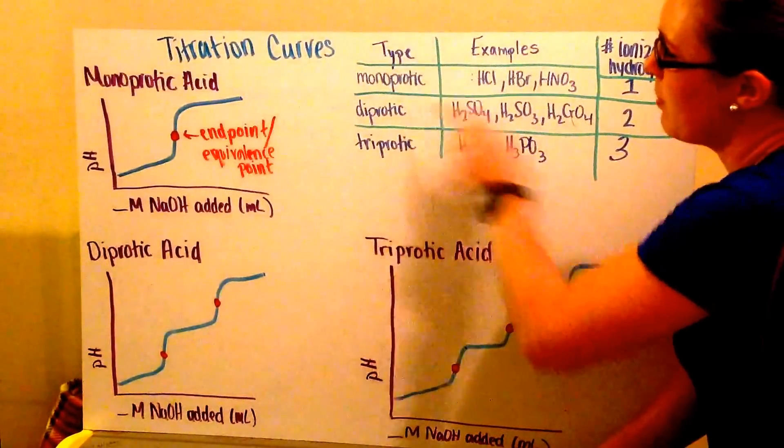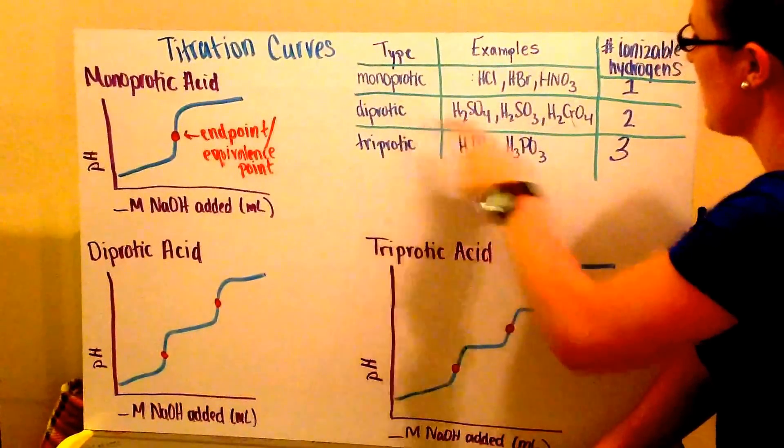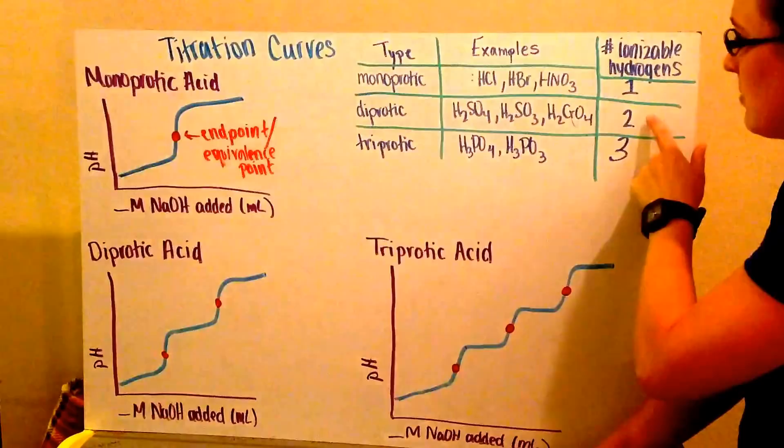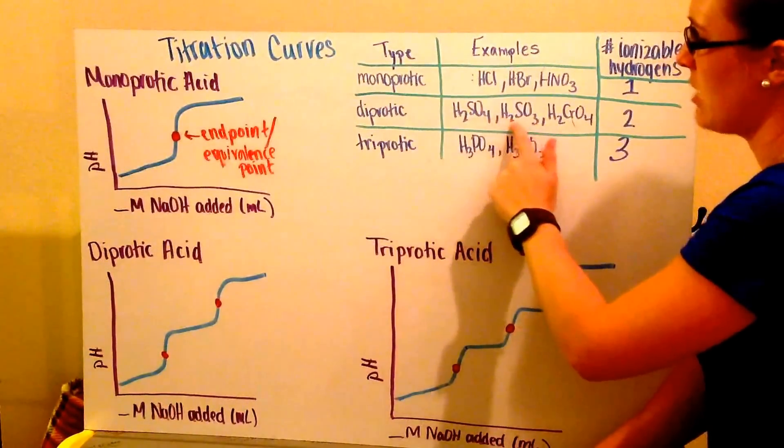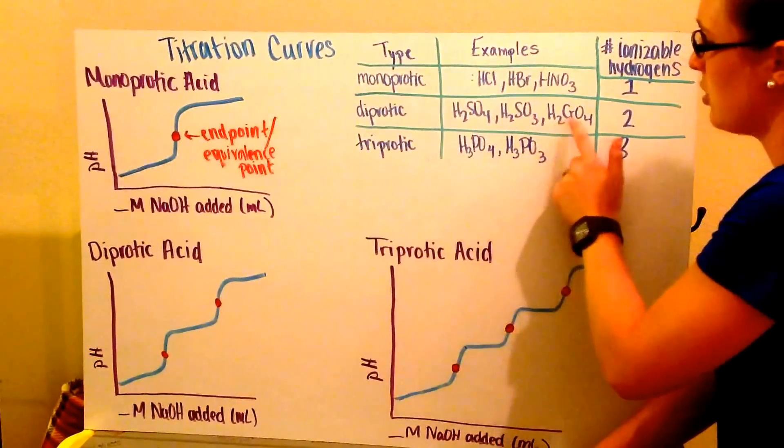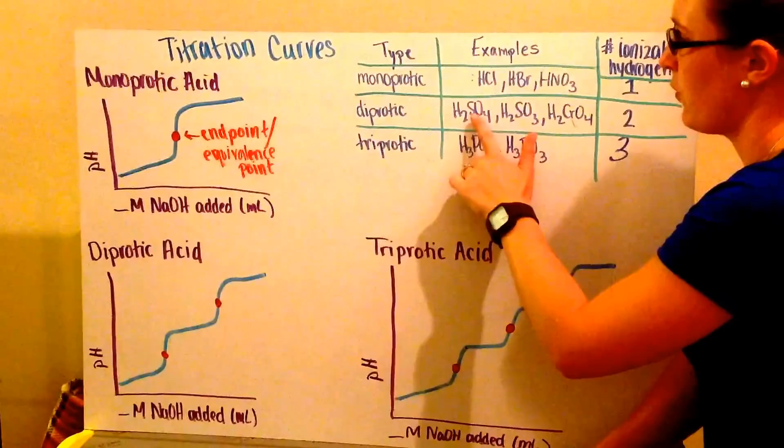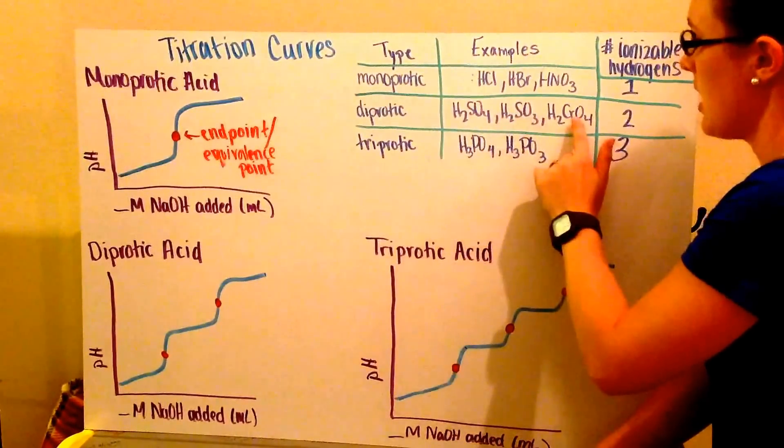The other type is diprotic acid. Diprotic acids have two ionizable hydrogens. I have H2SO4, H2SO3, and H2CrO4: sulfuric, sulfurous, and chromic acid.